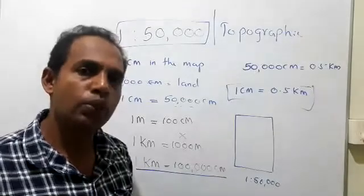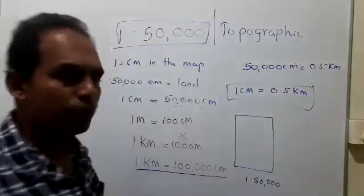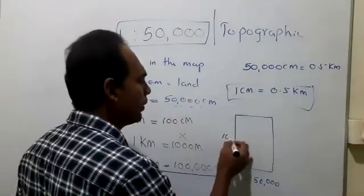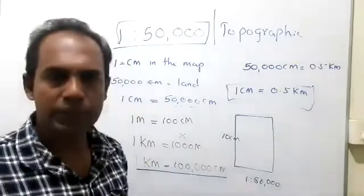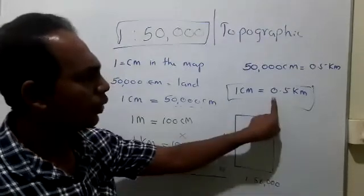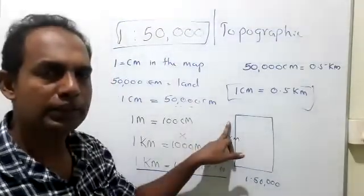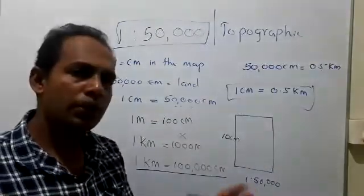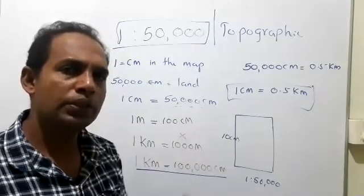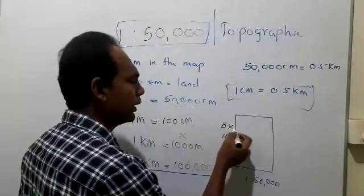What are the steps? You take the ruler and measure from one side to the other. We will say the distance is 10 centimeters. Now observe the scale: 1 centimeter in the map equals 0.5 kilometers on the land. So 2 centimeters equals 1 kilometer, 4 centimeters equals 2 kilometers, and if there are 10 centimeters it means there are 5 kilometers on the land.